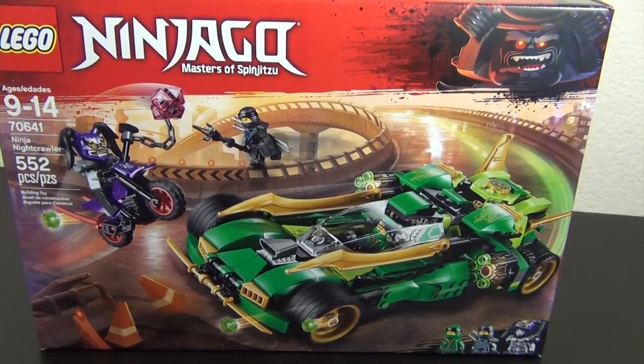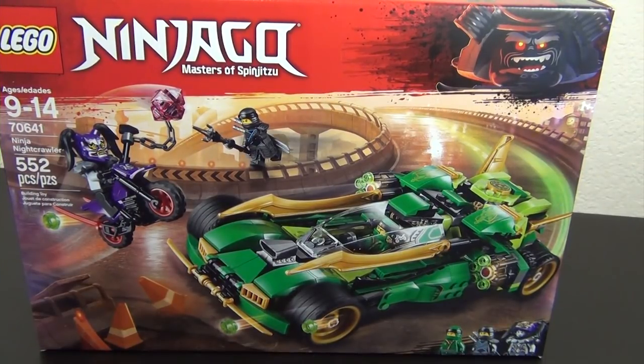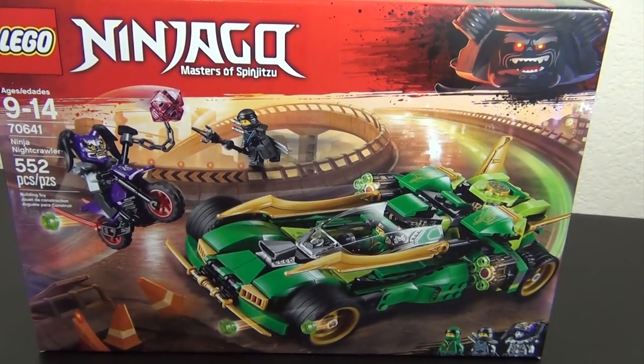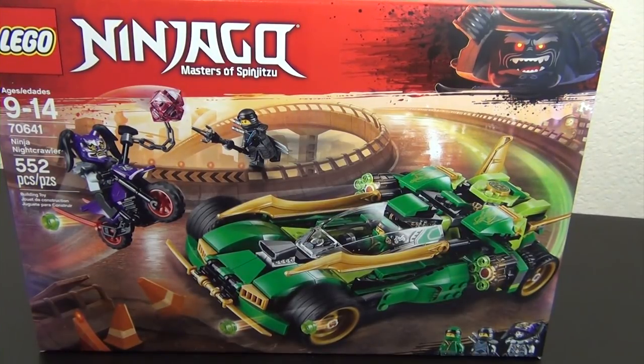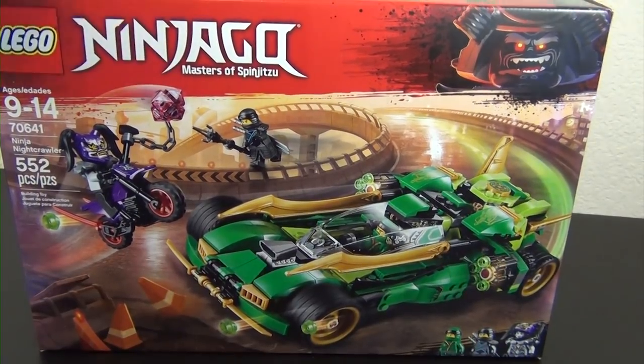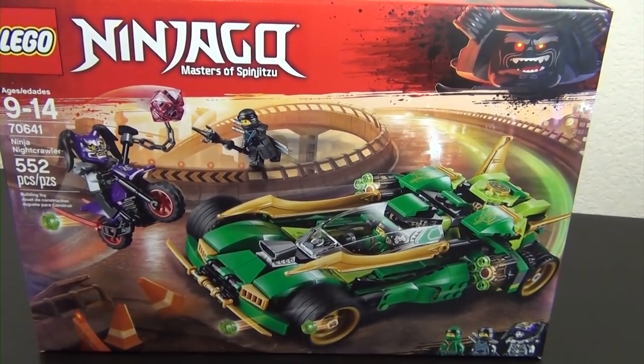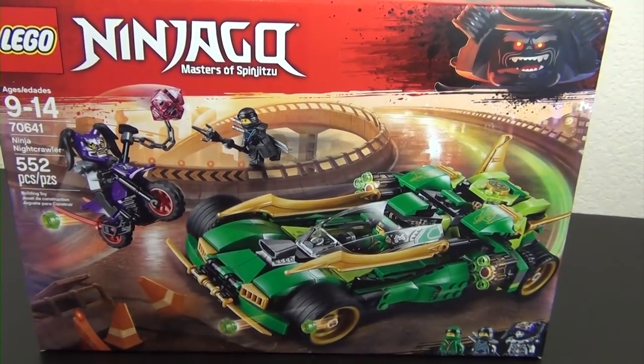Hey everyone, welcome back to The Hidden Brick, where today we're going to build the Lego Ninjago Ninja Nightcrawler set. This is set number 70641, 552 pieces, and we get three minifigures. We get Lloyd, Nia, and one of the new villains for this wave of Ninjago. This is Ultraviolet.